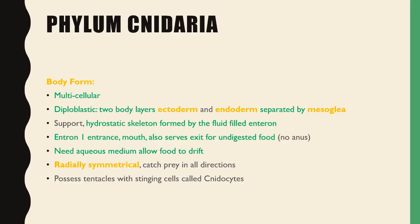The first phylum is Cnidaria. Cnidaria are multicellular organisms which are also diploblastic with two body layers — that's why the 'di' in front. Two body layers consisting of an ectoderm and an endoderm which are separated by mesoglea. They have support for a hydrostatic skeleton formed by the fluid-filled enteron. The enteron has one entrance — the mouth — and it also serves as the exit for undigested food, so therefore it doesn't have an anus.